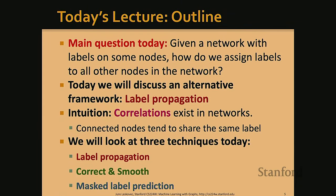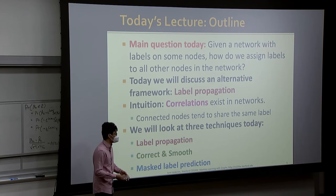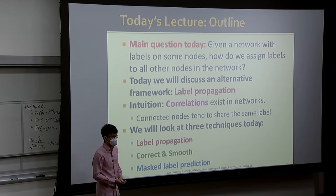Today we're going to solve this problem using a methodology called label propagation. The main assumption is that correlations widely exist in networks. Specifically, we assume nodes that are connected tend to share the same labels, and this effect actually widely exists in a lot of real-world networks. This is a general assumption you can always make for real-world graphs.